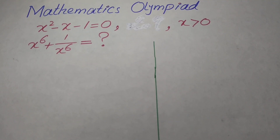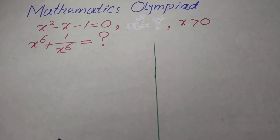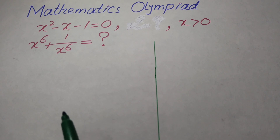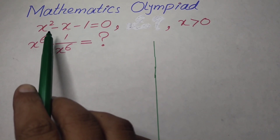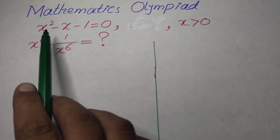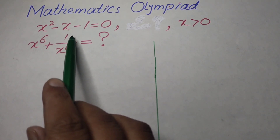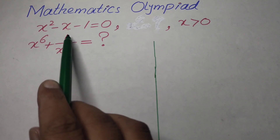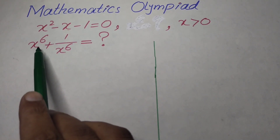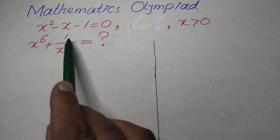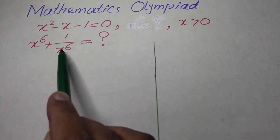Hello everyone, welcome back to the Map of Mathematics. In this video we are going to solve an interesting mathematical olympiad problem which is a polynomial equation. We have a second order polynomial, or quadratic equation, and we will find the value of x to the power of 6 plus 1 over x to the power of 6.